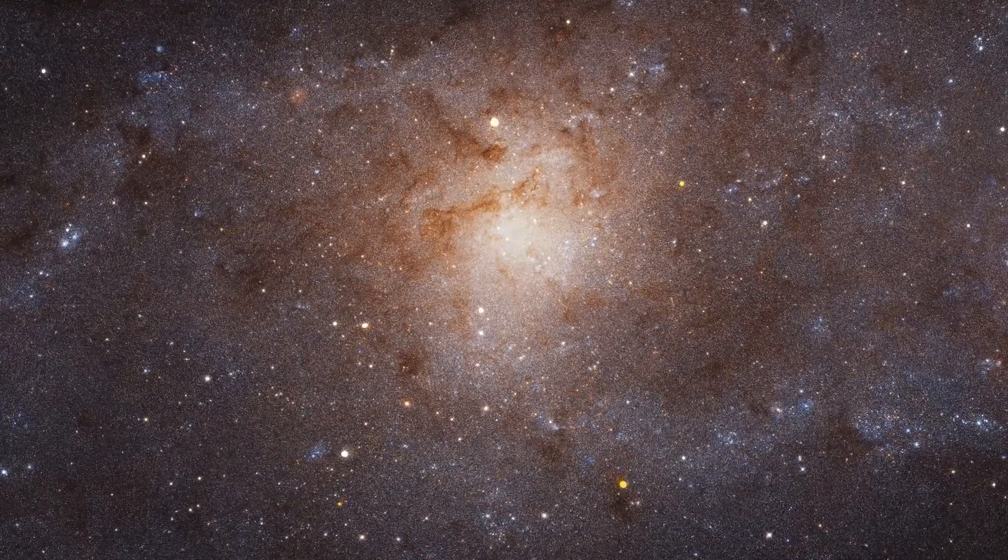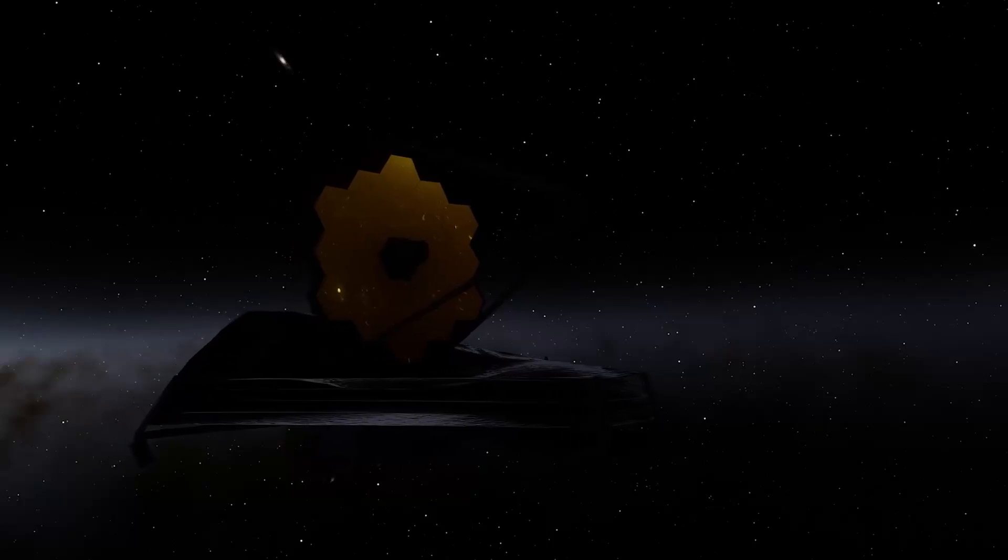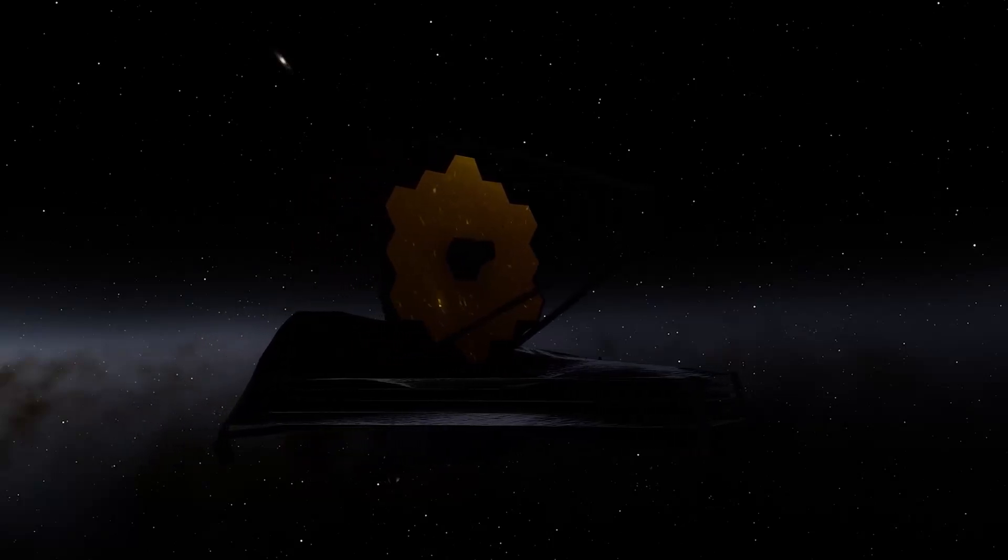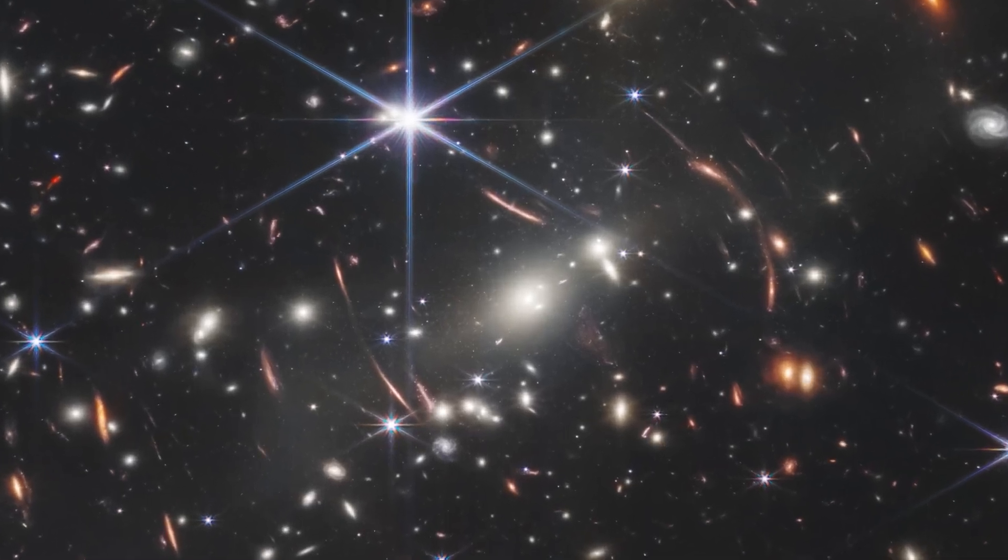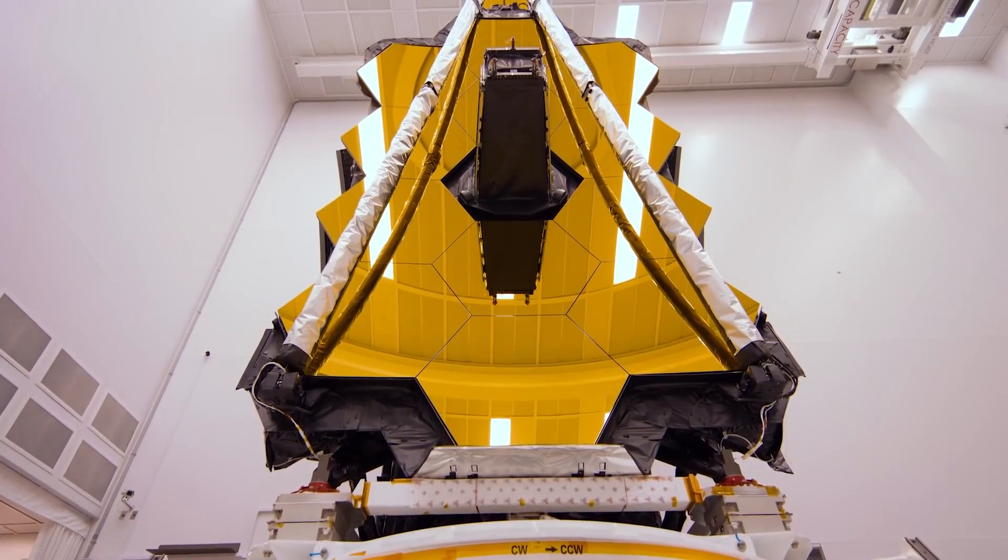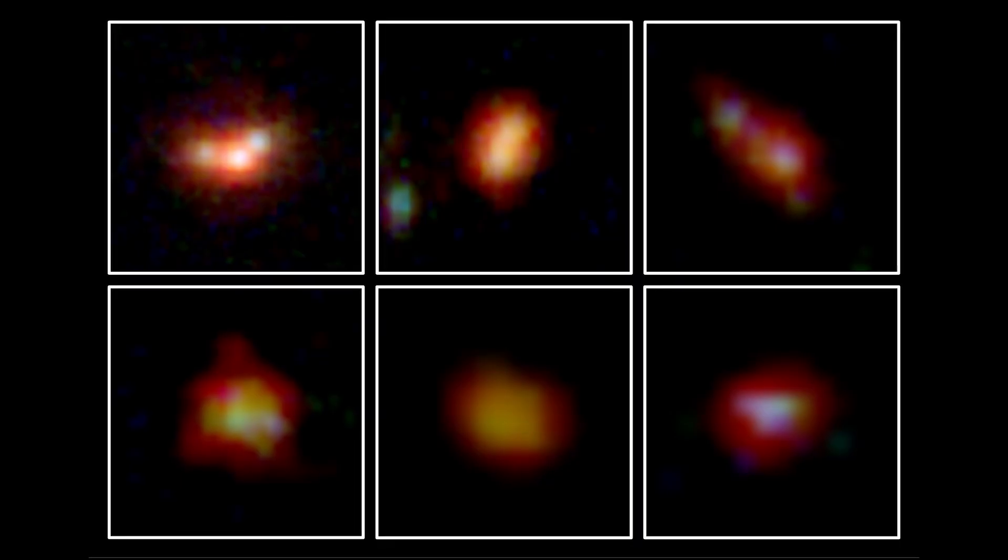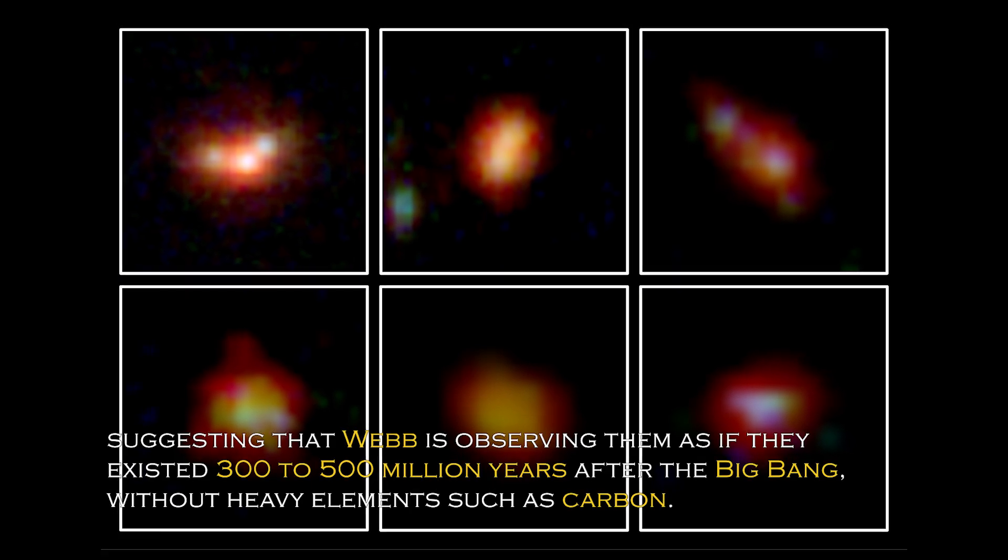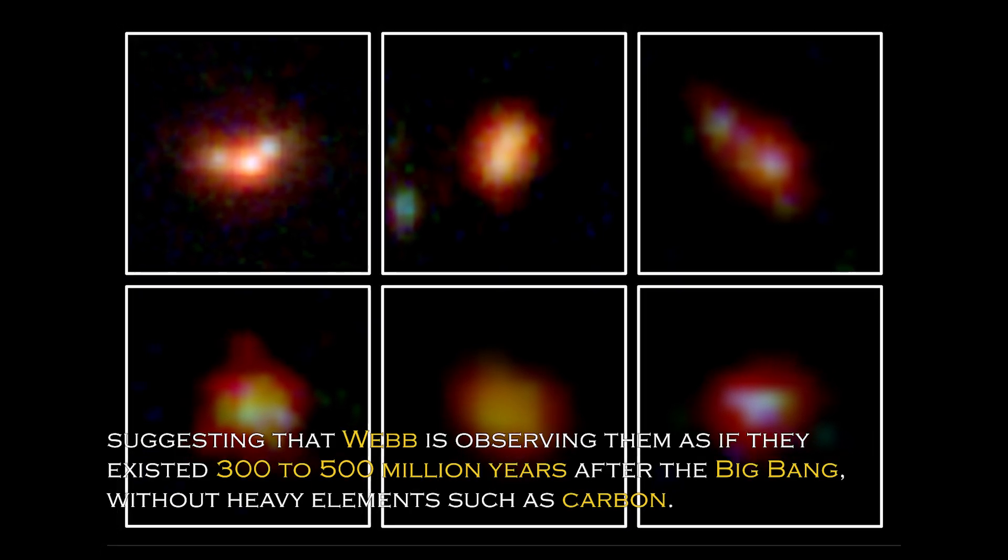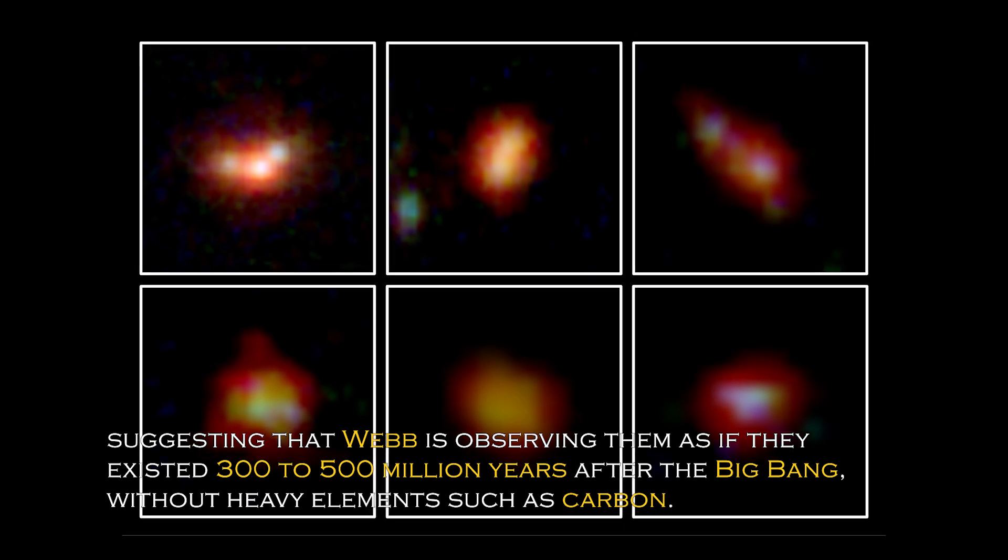Discovery has had a major impact on our understanding of the universe and has prompted NASA to develop even more powerful telescopes. Data obtained from Webb's spectrometer and near-infrared camera have revealed that four of the six primordial galaxies have extreme redshifts, suggesting that Webb is observing them as they existed 300 to 500 million years after the Big Bang, without heavy elements such as carbon.